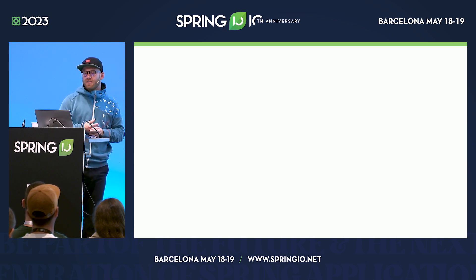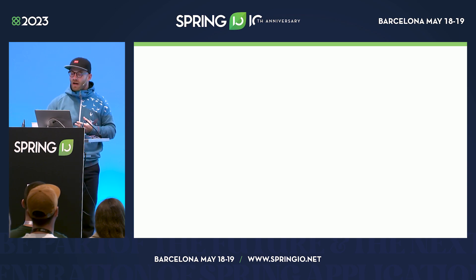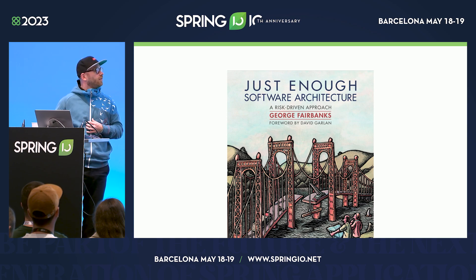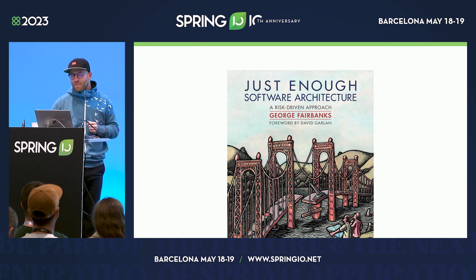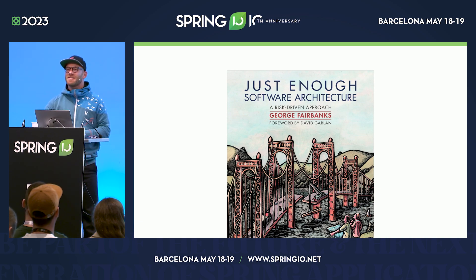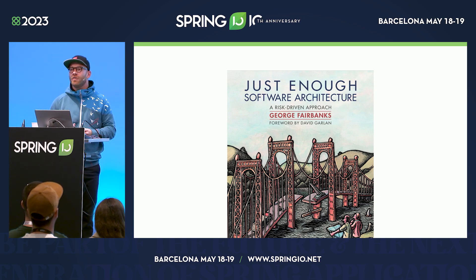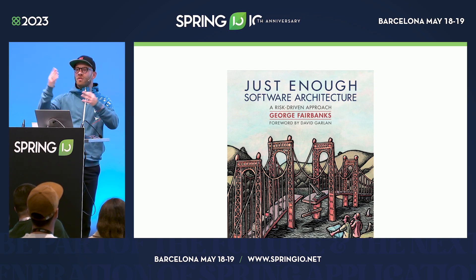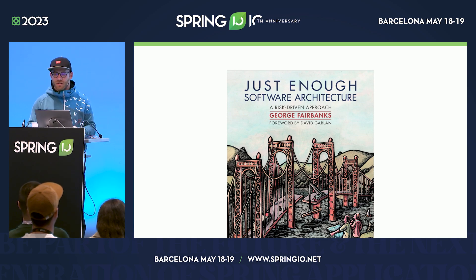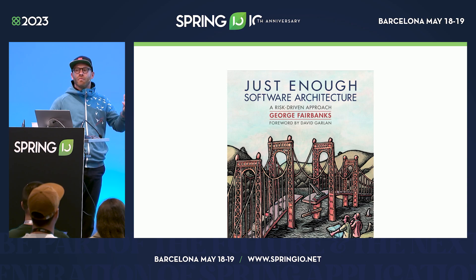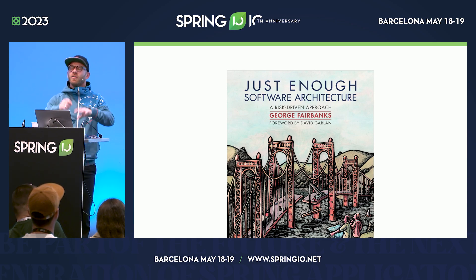There's an interesting book called Just Enough Software Architecture — a great title because that's what we want. Fairbanks in turn quotes a paper by Eden and Kazman that explores how different design elements used in architectural definitions can be classified. That classification allows us to derive means to actually transfer those concepts into code. They separate this into two groups. One is extensional elements — basically defining things by naming and enumerating them. My system consists of an order system, an inventory system, a shipment system.